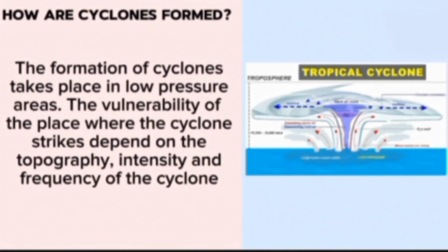How are cyclones formed? The formation of cyclones takes place in low-pressure areas. The vulnerability of the place where the cyclone starts to gain intensity and frequency affects the cyclone.